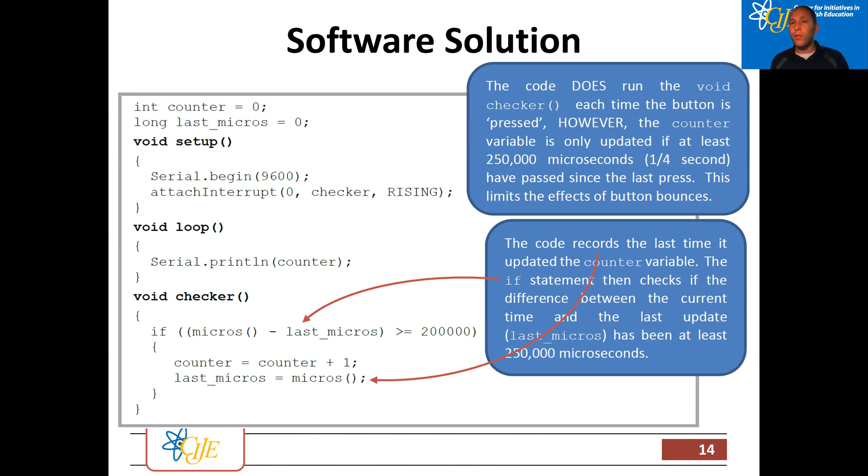We're going to wait for at least 200 microseconds passed, which in this case is a fifth of a second. If we want to do a quarter of a second, we do 250,000. So we're not stopping our bounces and we're not stopping the ISR, the void checker from happening over and over again. What we are doing is we're ensuring that at least a quarter of a second has passed since the last time we updated our variable that we know that the bouncing has stopped.